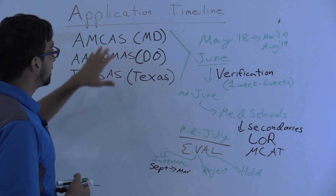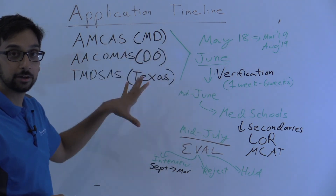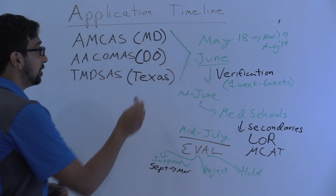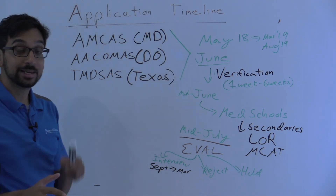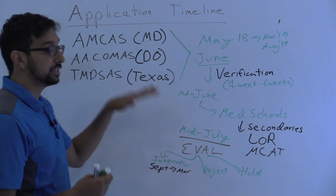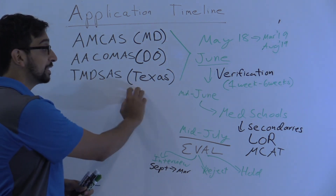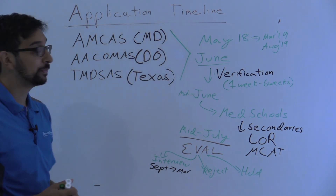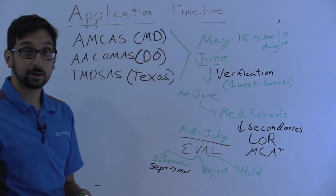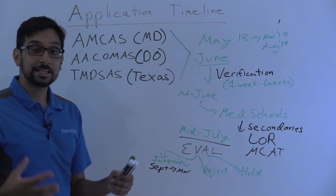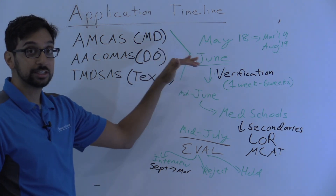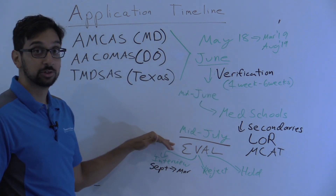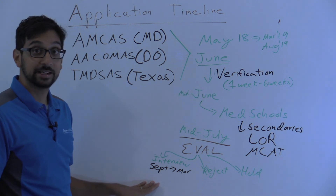The DO application typically follows a similar timeline, opening in May — and actually you can usually submit it within the first couple of days of May, so a lot of the timeline is pushed up by about four weeks. Same thing with the Texas application. Bottom line: if you're looking to apply to medical school this year, get your application ducks in a row by May so you can submit in early June. The later you submit, the longer verification takes, the longer it takes for schools to evaluate you, and the fewer chances you have at an interview overall.